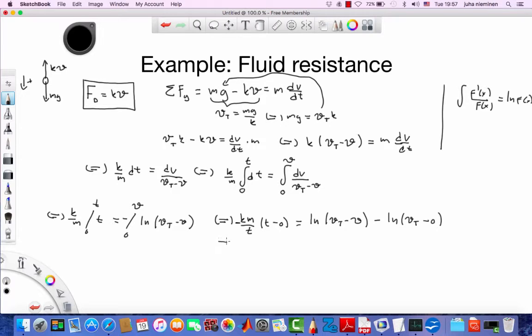And let's clean this up. So it's going to be minus k over m, oh, there's a mistake. So there's no t there. It's k divided by m, of course, like this. So k over m times t. And here we have ln vt minus v minus ln vt.